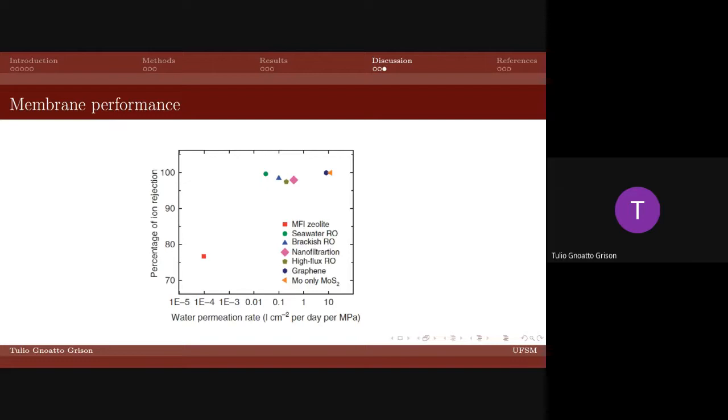The molybdenum disulfide membrane with molybdenum nanopore type achieved performance 2 to 5 orders of magnitude higher than traditional membranes, and about 70 percent higher than graphene nanopores, which were already promising.